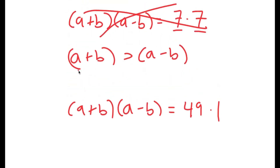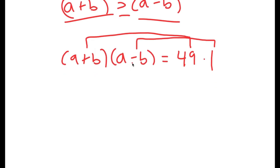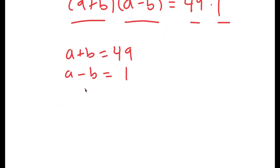Because a plus b is greater than a minus b, we can say that a plus b is equal to 49 and a minus b is equal to 1, since 1 is less than 49. What we have here is a system of equations, and I'm going to add these equations together.